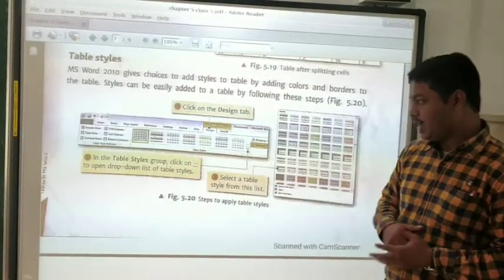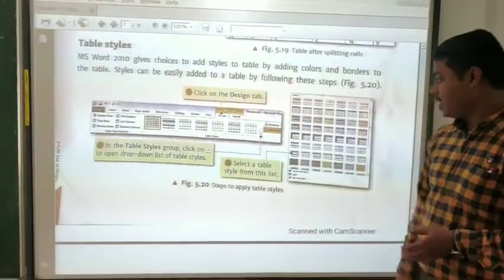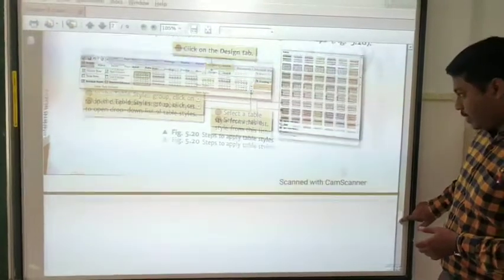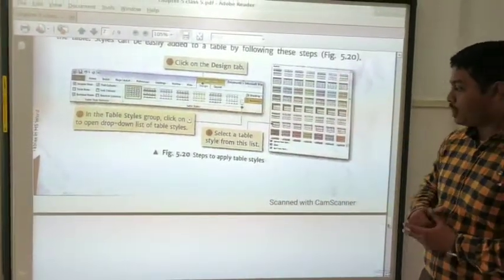Steps to assign table styles: go to the Design tab, then select any table style you want. You will get the output this way. These are the outputs of the table styles.